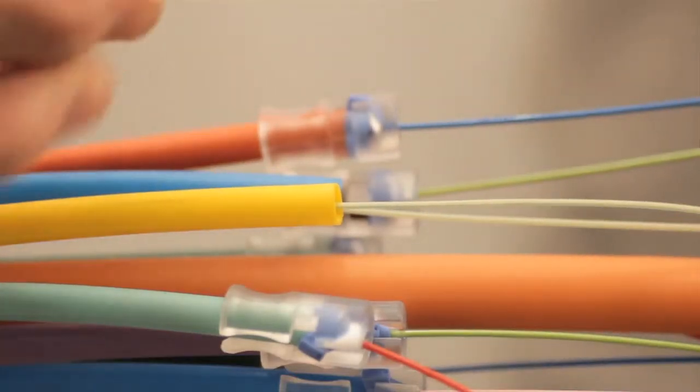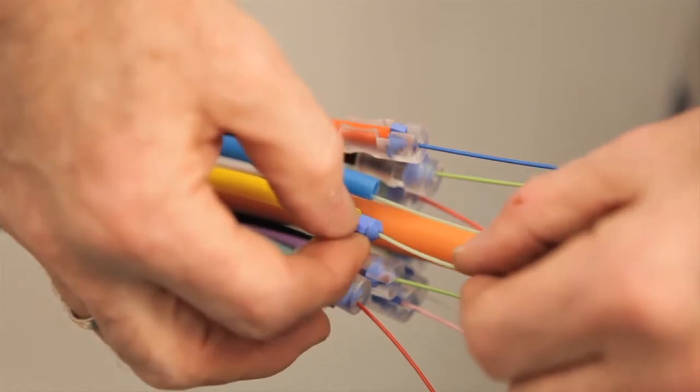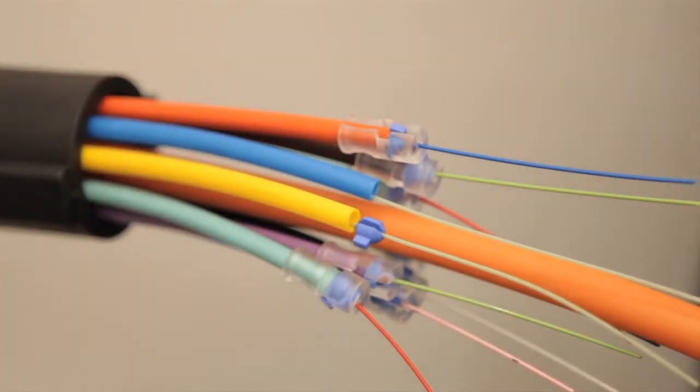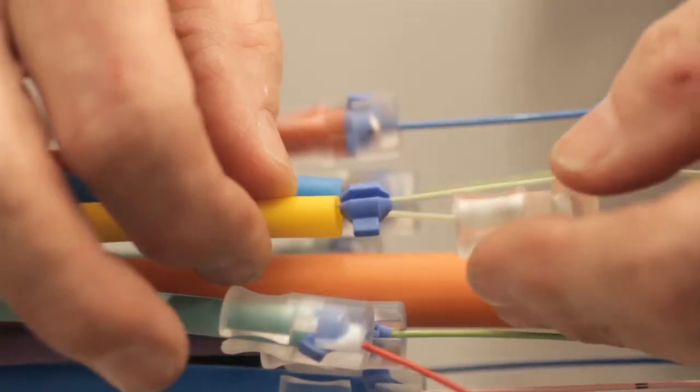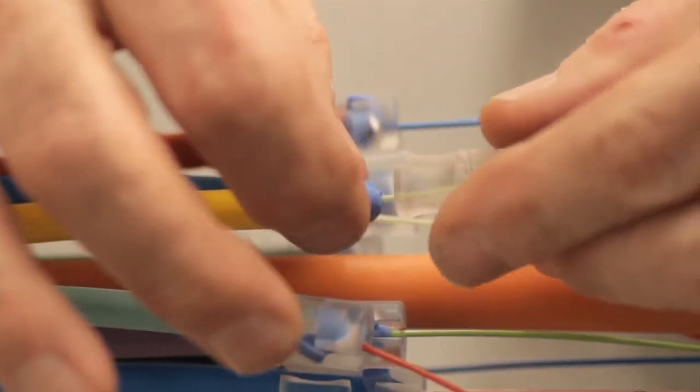Philoform subduct seals ensure a gas and watertight seal between small subducts and fiber optic cables. Place the blue rubber seal onto the fiber optic cable and press it onto the subduct with the transparent plastic casing.